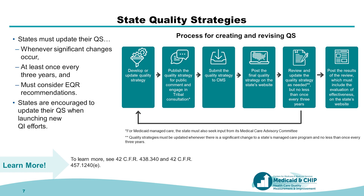Your state must update its quality strategy as needed, but not less than once every three years. Though not required, you could consider updating your quality strategy when launching a new quality improvement effort, such as joining a CMS quality improvement affinity group. When updating the quality strategy, you must consider EQR recommendations, which we will discuss further on the next slide.